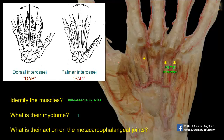We can see that these palmar interossei: one is attached to the index finger, another to the ring finger, and another to the little finger. There is no palmar interosseous attached to the middle finger. On the other hand, there are two dorsal interossei attached to the middle finger, because the middle finger can be abducted on either side, so it needs two muscles to move it.